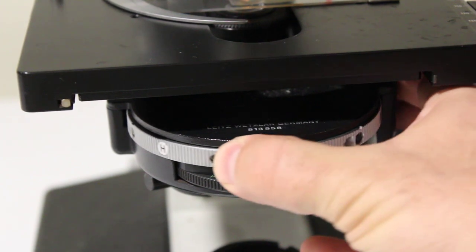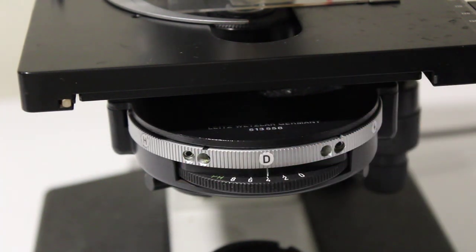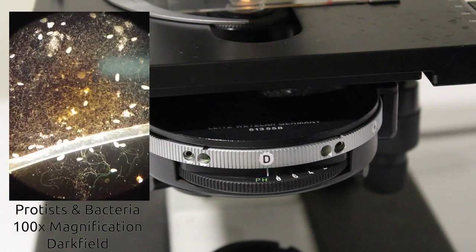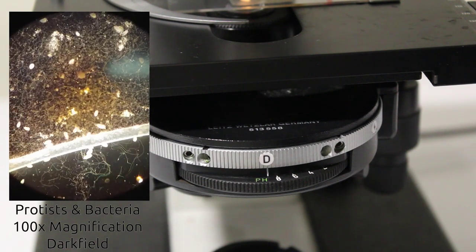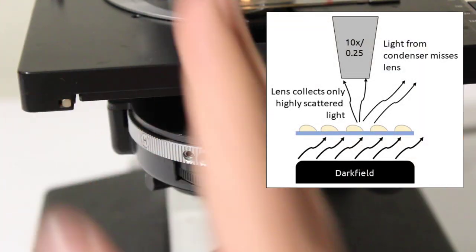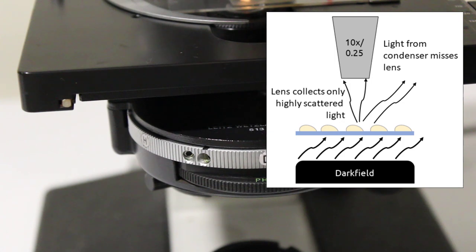The first of these is this one here indicated by a D which is dark field and this is a special type of imaging which basically allows the sample to show up as bright points on a dark background. This is achieved because this is directing light into the sample at a steep angle so it has to reflect off the stuff to be collected by the lens.